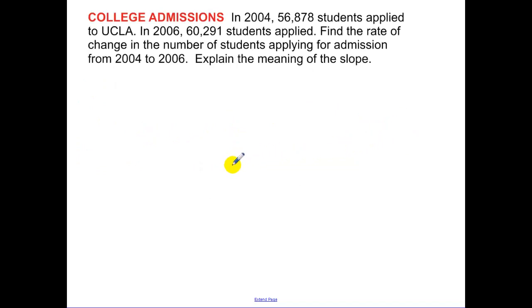Our first example. And yes, I want you to write this whole thing out. In 2004, 56,878 students applied to UCLA. In 2006, 60,291 students applied. Find the rate of change in the number of students applying for admission from 2004 to 2006 and explain the meaning of the slope or the rate of change.